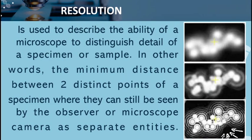In resolution, it is used to describe the ability of a microscope to distinguish detail of a specimen or sample. In other words, it is the minimum distance between two distinct points of a specimen where they can still be seen by the observer or microscope camera as separate entities. For example, it is like the camera in the phone that we use every day to capture images — it is the same as the microscope, but to see it clearly or mas malinaw, we have to use the light of a compound microscope to focus the image or the subject.